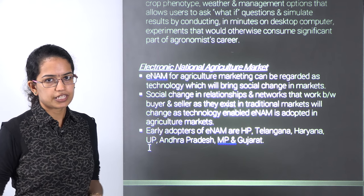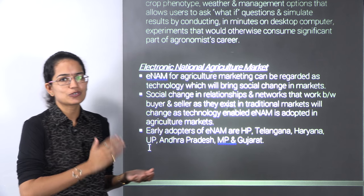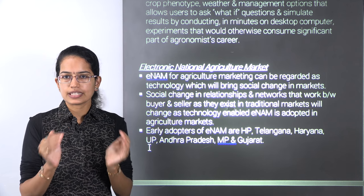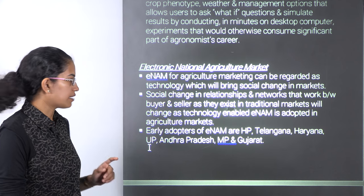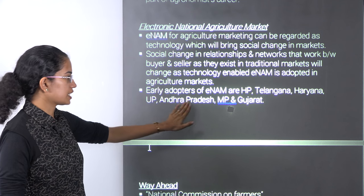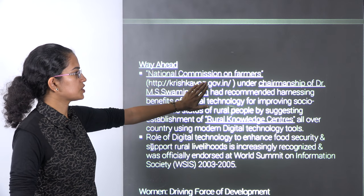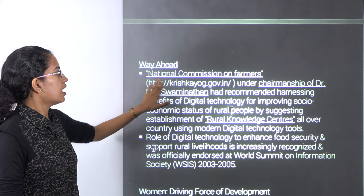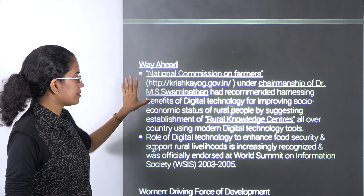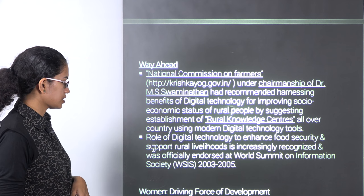eNAM — Electronic National Agricultural Market — is a common pricing support platform providing a minimum support price for all farmers across India. The early adopters were Himachal Pradesh, Telangana, Haryana, Uttar Pradesh, Andhra Pradesh, Madhya Pradesh, and Gujarat. We also have the National Commission on Farmers under Dr. Swaminathan, with krishikayog.in as the working website, and rural knowledge centers to be established across India.